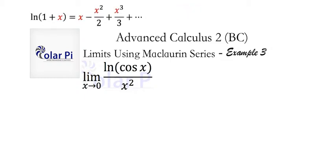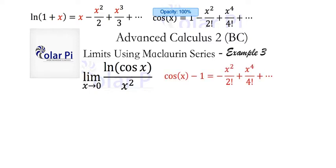We're going to start off with the Maclaurin series for ln(1+x). Remember, ln(x) does not have a Maclaurin series. We also need the Maclaurin series for cosine of x, because we're going to take the Maclaurin series for cosine of x and subtract 1 from both sides to get the Maclaurin series for cos(x)-1.